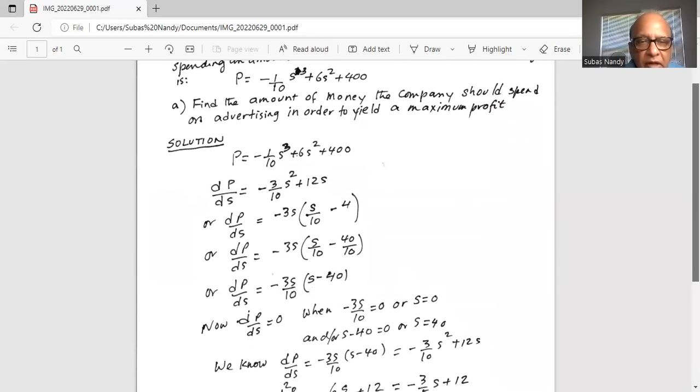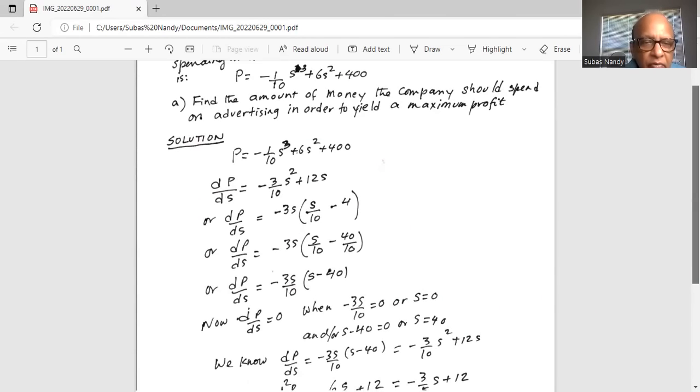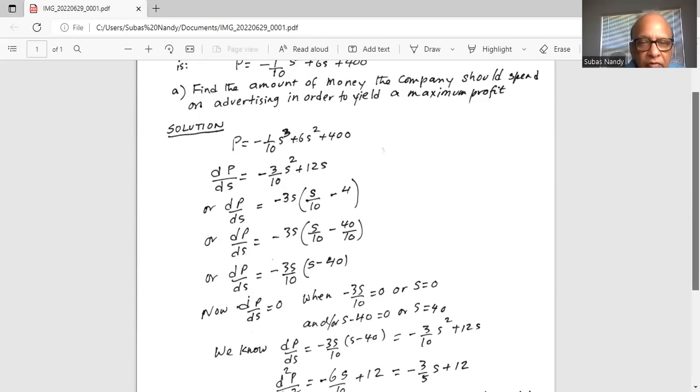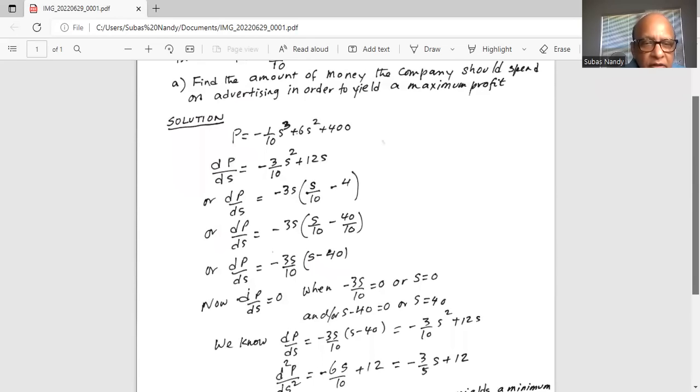So dp by ds or derivative of p with respect to s is minus 3s. Take outside the parenthesis, it's s over 10 minus 4. So we can write dp by ds as minus 3s times s over 10 minus 40 over 10. So 4 I'm writing as 40 over 10. What is the reason? Then I will take the 10 in the denominator outside the parenthesis.